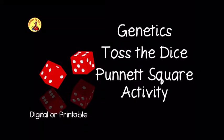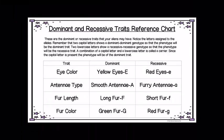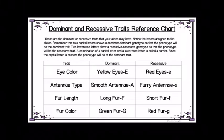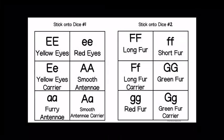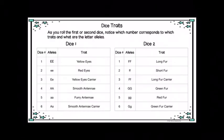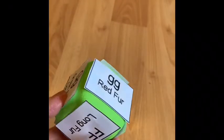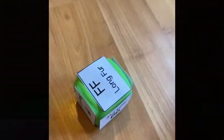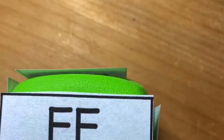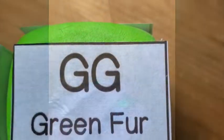This is a genetics toss-the-dice Punnett square activity, which is all based on chance to design an alien. Labels are taped onto foam dice which children toss onto the table to determine four different traits across two dice: fur and antenna on one, and eye color and length of fur on the other.